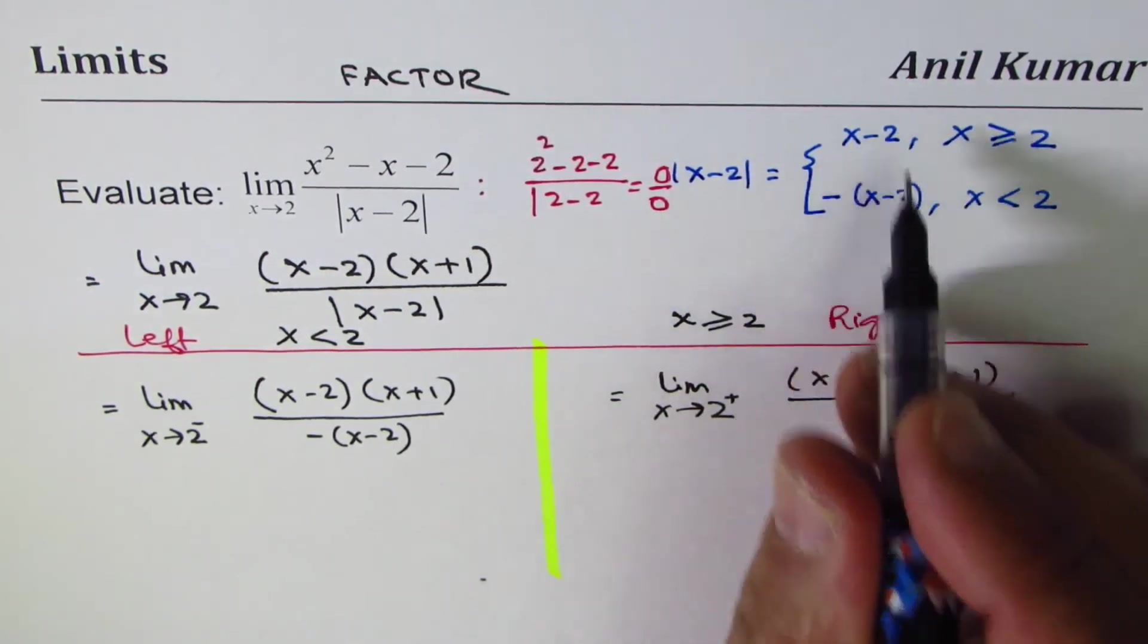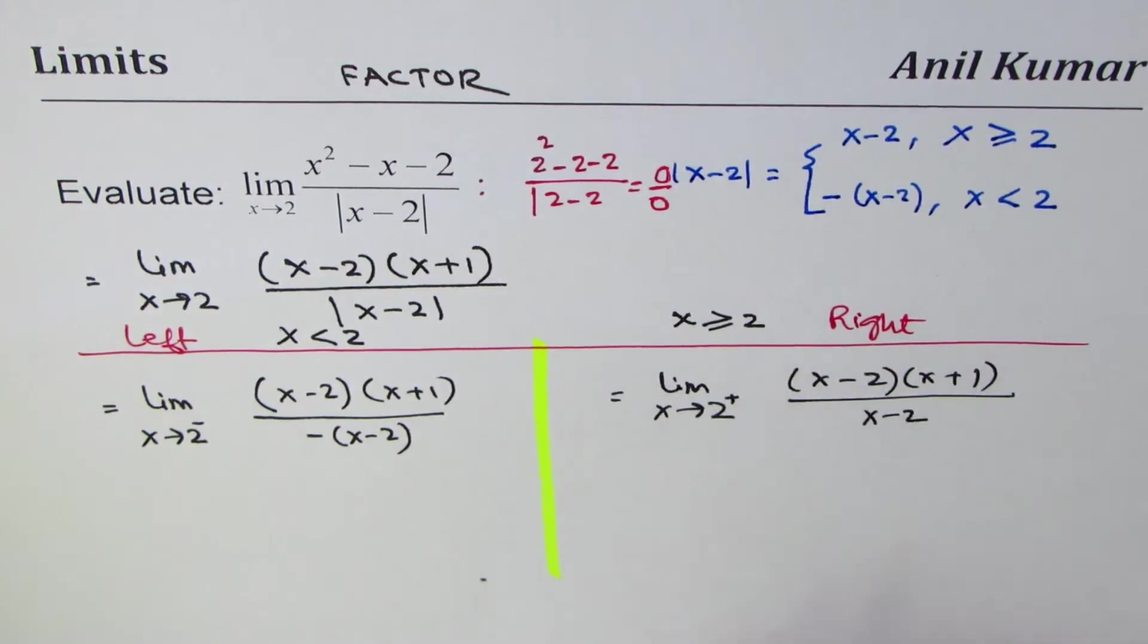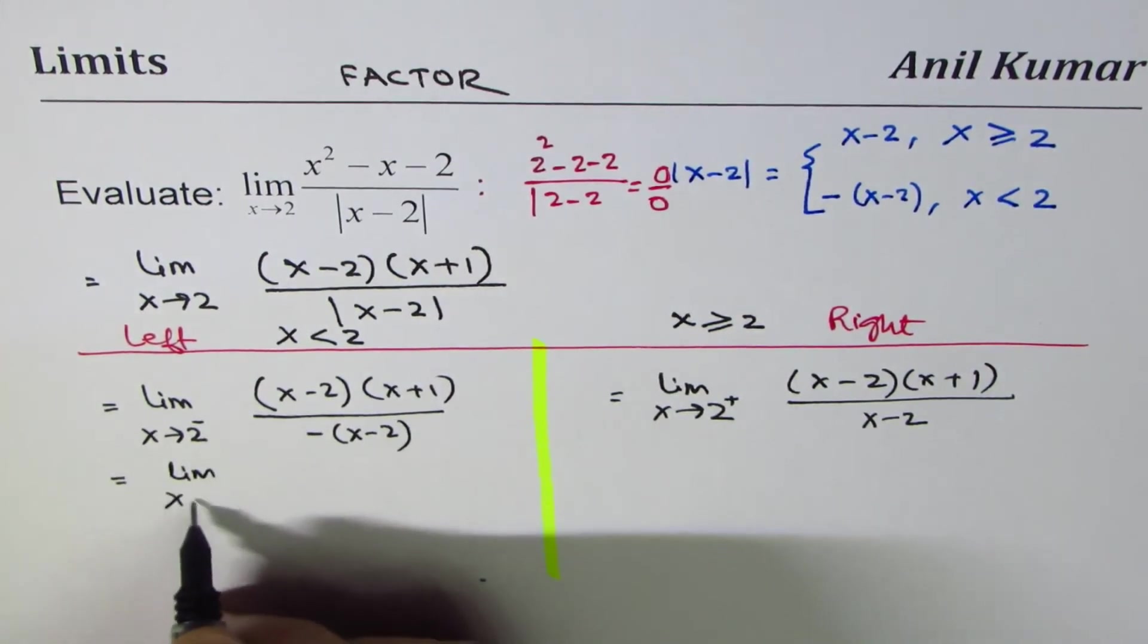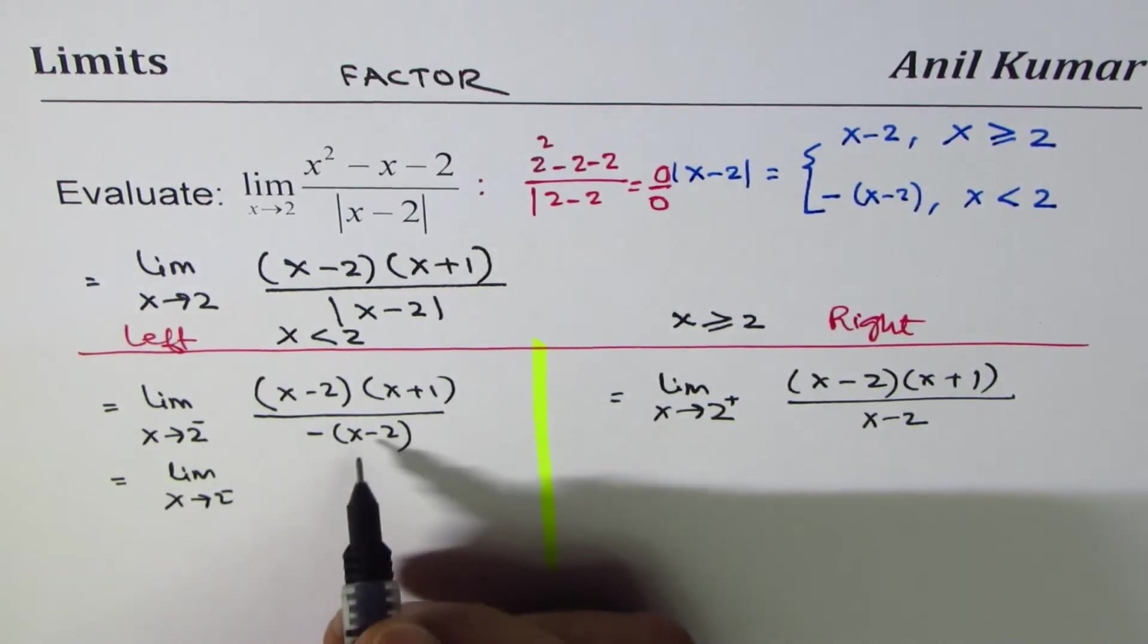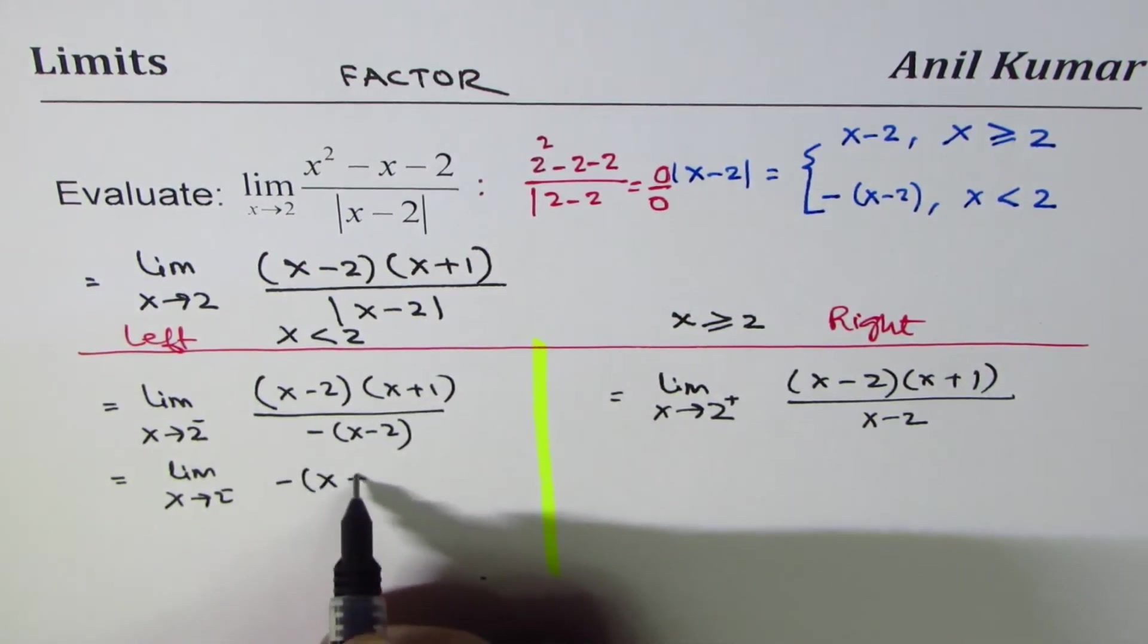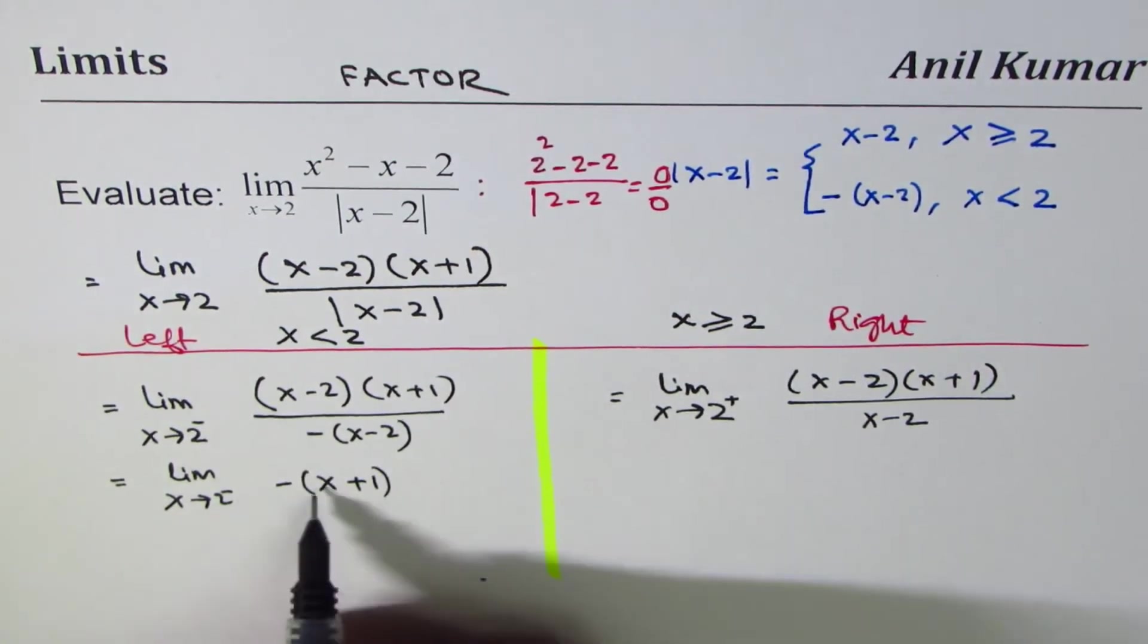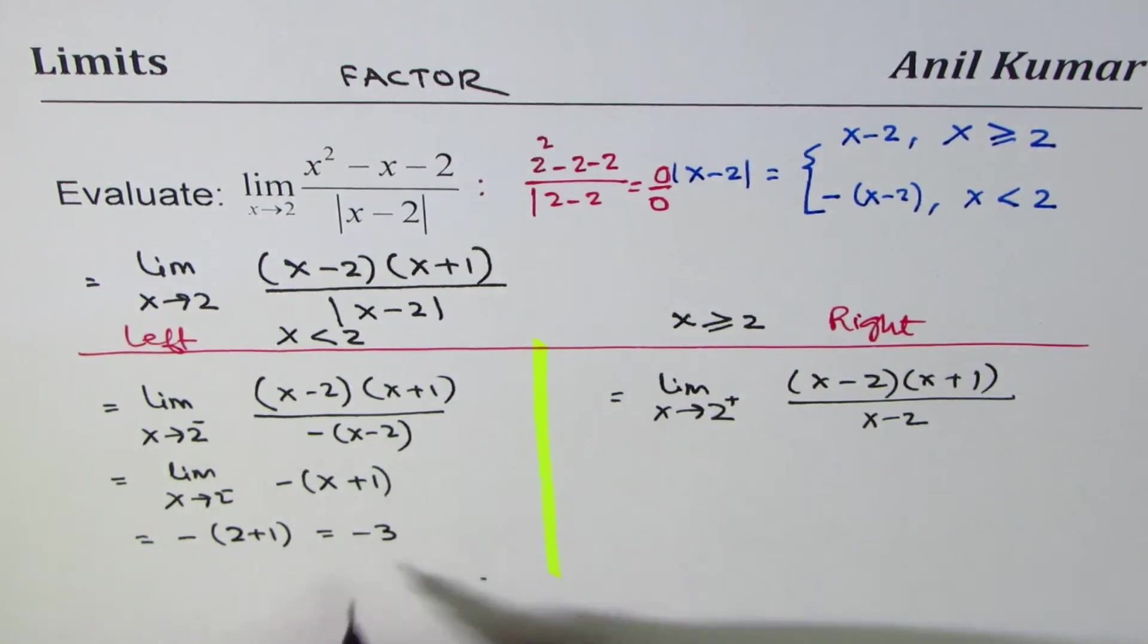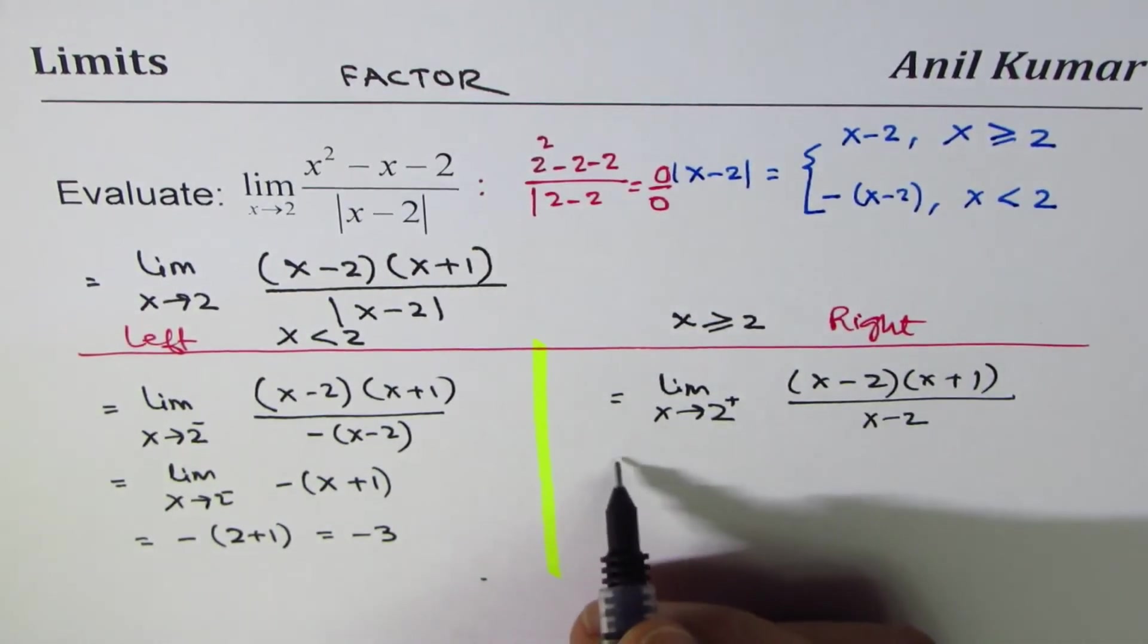Let's do the left side first. Limit x approaches 2 from the left side, we get minus of x plus 1. If I substitute 2 here, I get minus of 2 plus 1 which is minus 3.